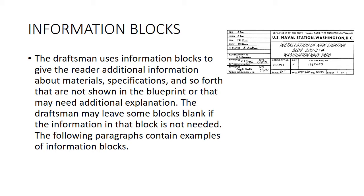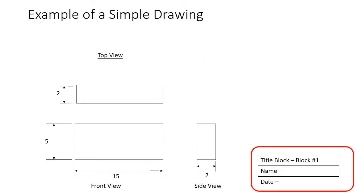Here's an example of an information block. Here's a simple drawing — you can see in the lower right-hand corner we've got a title block. It's just a simple three-view drawing: top view, front view, side view — it's just a block. You can see the title block where you'd have the name of the person that did the drawing and the date.